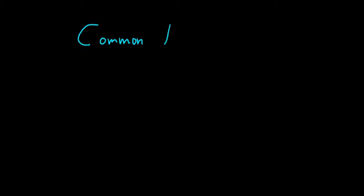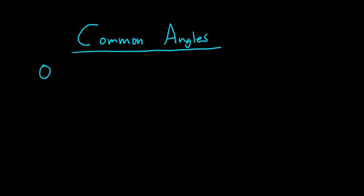We continue our discussion of angles and their measures. There are some common angles that are really useful to know in mathematics and in trigonometry. The first one is 0 degrees. 0 degrees is the same thing as 0 radians.